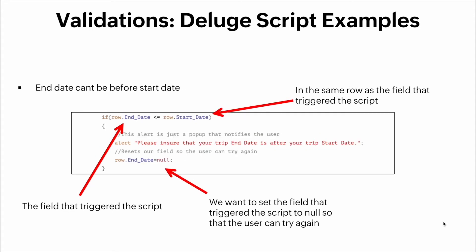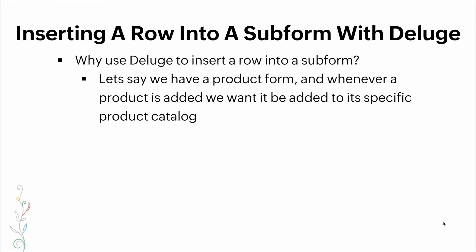For the second workflow, we check that the end date field value is less than or equal to the start date field value. If so, we alert the user to ensure the trip end date is after the trip start date, then set the end date field to null so the user can try again.